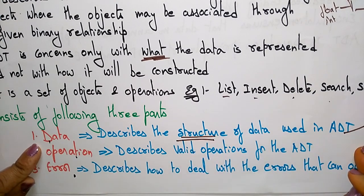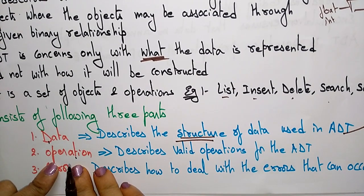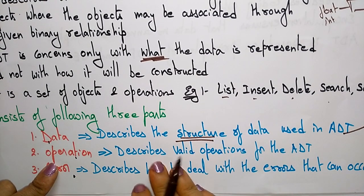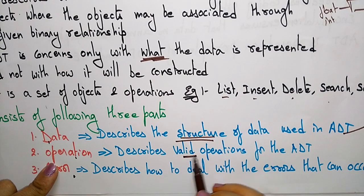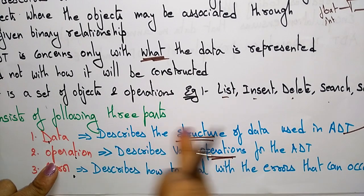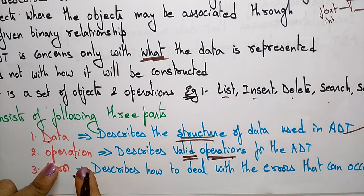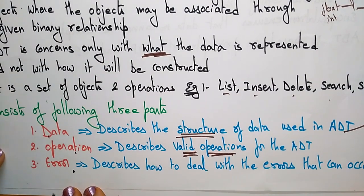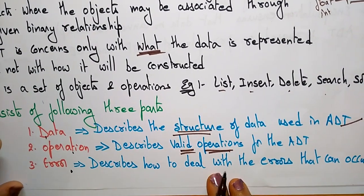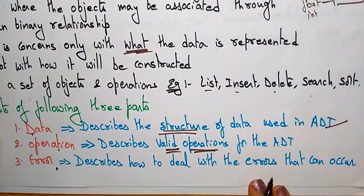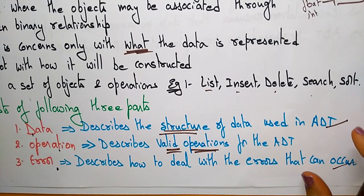Data describes the structure of data used in abstract data types. Operations refers to the valid operations for the abstract data type. Errors describes how to deal with the errors that can occur. These are the three parts that abstract data type consists of.